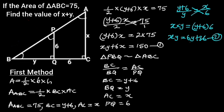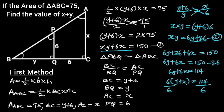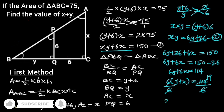Going further, let's substitute XY with 6Y plus 36 in equation 1. Doing so gives us: 6Y plus 36 plus 6X equals 150. Subtracting 36 from both sides leaves us with 6Y plus 6X equals 114. Factoring out 6 on the left side: 6 times (Y plus X) equals 114. Dividing through by 6, we get X plus Y equals 19.